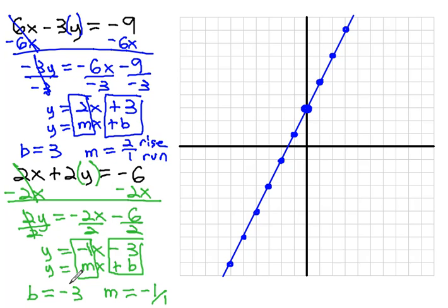So we'll start at that y intercept of negative 3. And then we'll use our slope of rising negative 1 and running negative 1. Rise negative 1, run negative 1, negative 1, negative 1, and we get all these points going backwards, reversing the process. We get a whole bunch of other points.